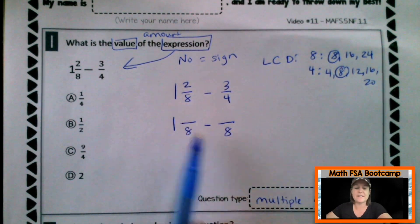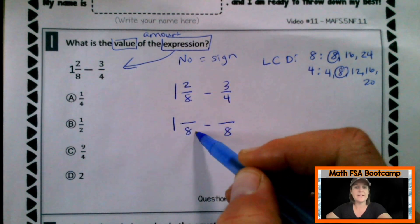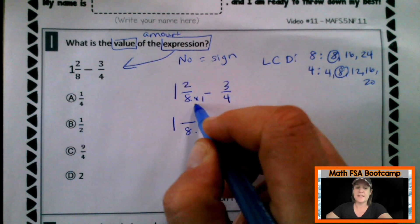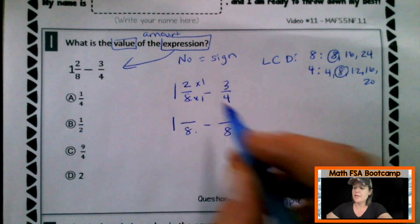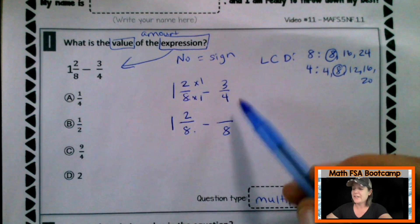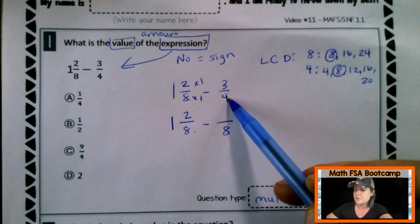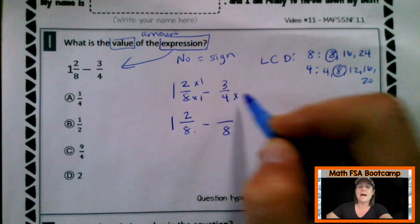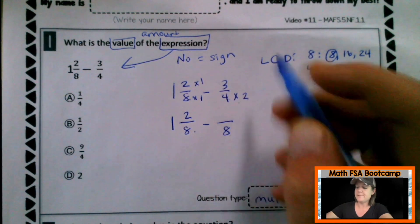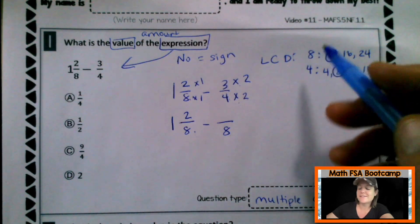So that means that we can rewrite our fraction. And this time we're going to have 8 in the denominator. So now we look, how did we get from 8 to 8? We multiply by 1, same on the bottom, same on the top. 2 times 1 is 2. Now let's take a look at our next fraction. We went from a denominator of 4 to a denominator of 8. So we multiplied by what? 4 times 2. Same on the bottom, same on the top. 3 times 2 is 6.